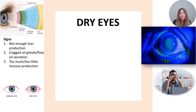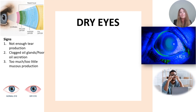Our tear film is made up of three different parts: mucus, water, and oil. We have goblet cells that secrete mucus, lacrimal glands that make water, and oil glands called meibomian glands in the eyelids. They pump out oil every time we blink, and this is what keeps our tears from evaporating.